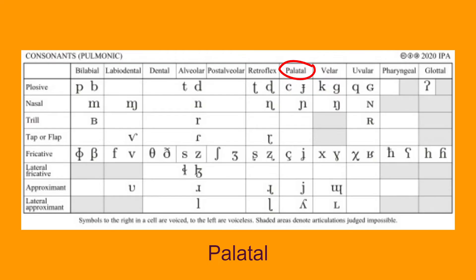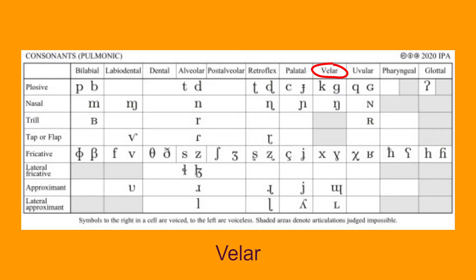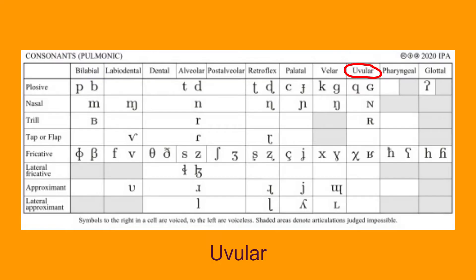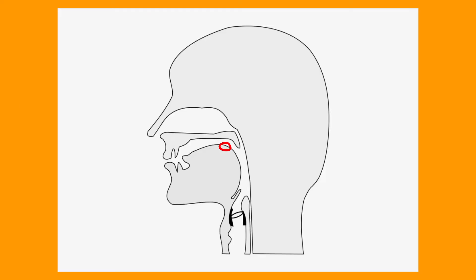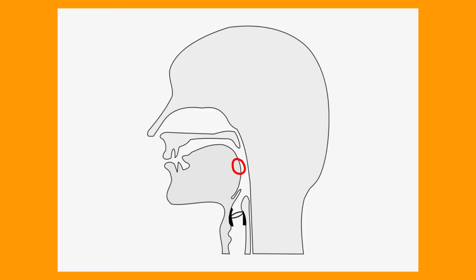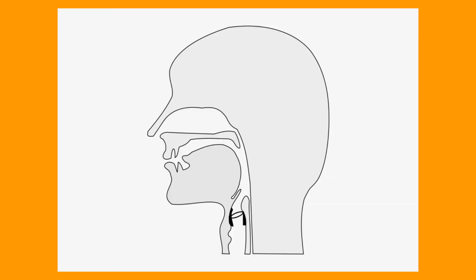Palatal, which refers to placing the body of the tongue at the hard palate. Velar, which refers to placing the back of the tongue at the soft palate. Uvular, which refers to placing the back of the tongue at the uvula. Pharyngeal, which refers to placing the root of the tongue at the pharynx. And glottal, which refers to the glottis.